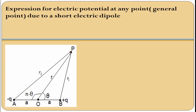We want to find the electric potential at any general point due to this short electric dipole. Consider a short electric dipole having charges minus Q and plus Q separated by small distance 2A, with dipole moment P. Here P is the point at which the electric potential is to be calculated, and R is the distance from the center of the dipole. The line OP equals R, making a certain angle theta.